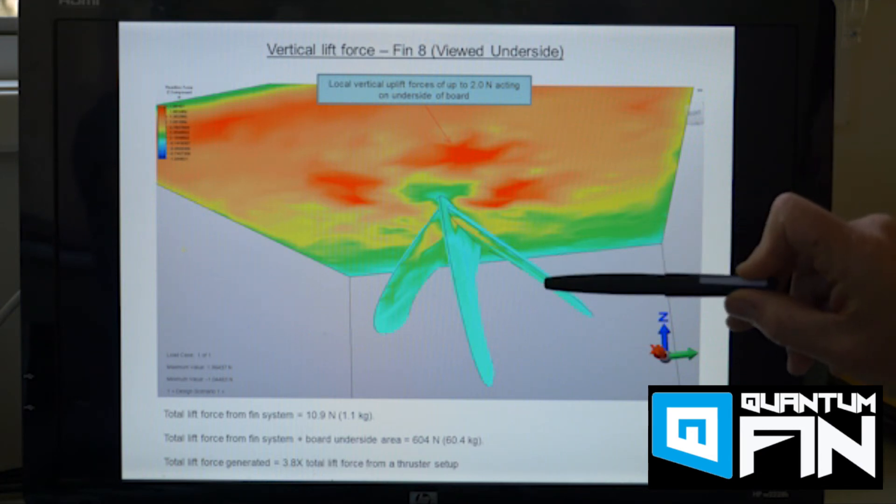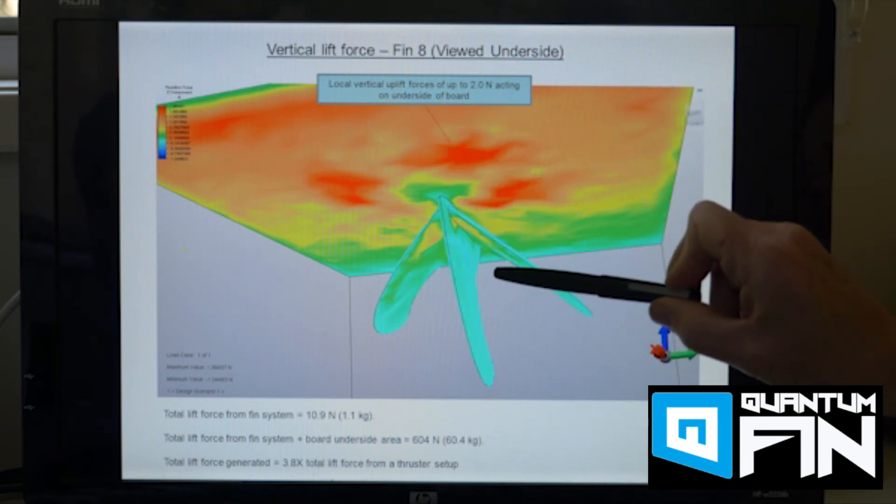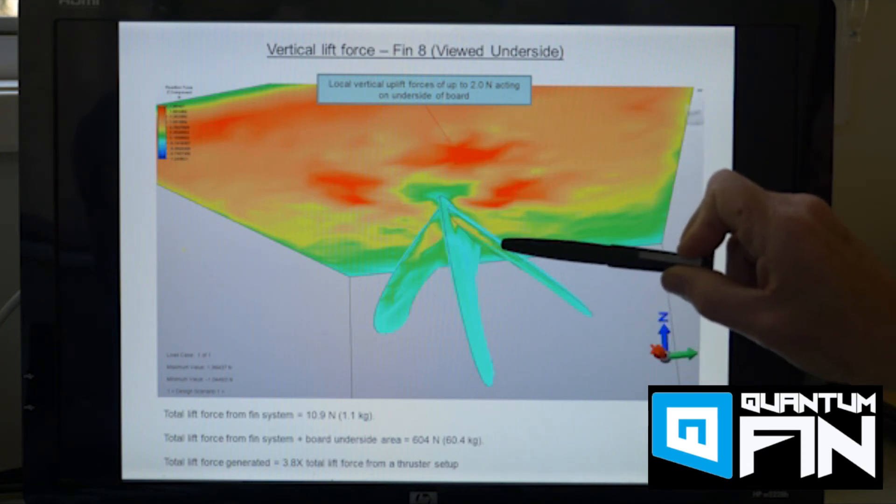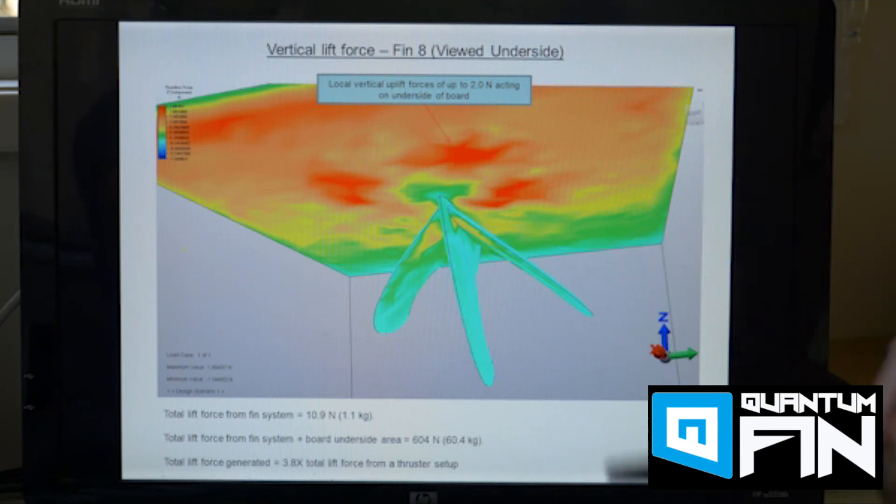So what we have here is a system that's generating nearly four times as much lift as a conventional thruster type setup. So again for anybody that's trying to take off on the wave this lift force is going to be a big help in getting you standing up faster and also having more fun and maneuvering the board better when you're on the wave.